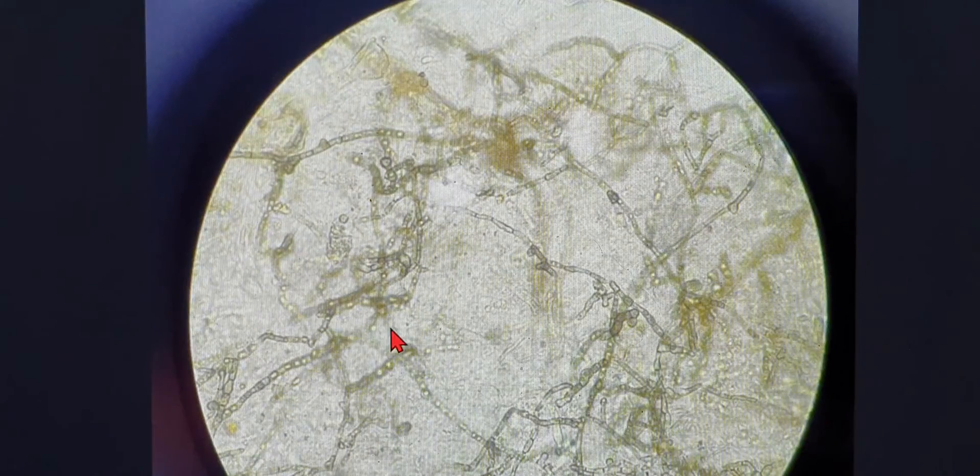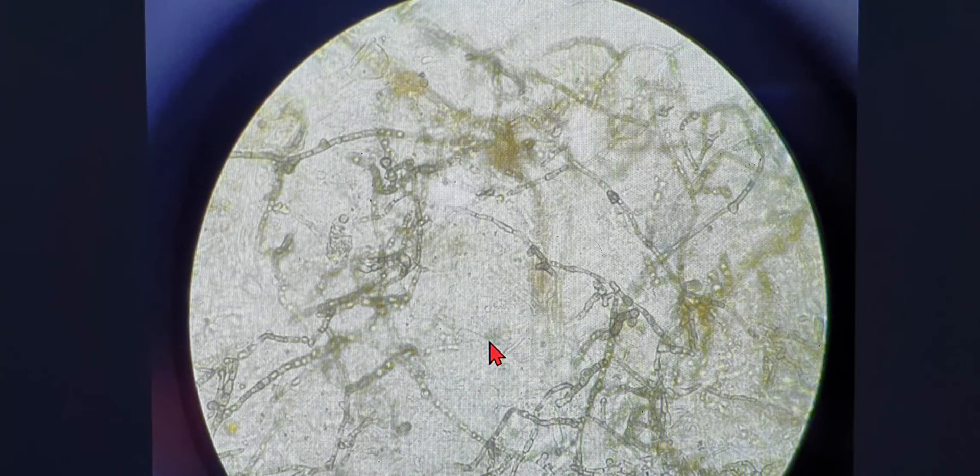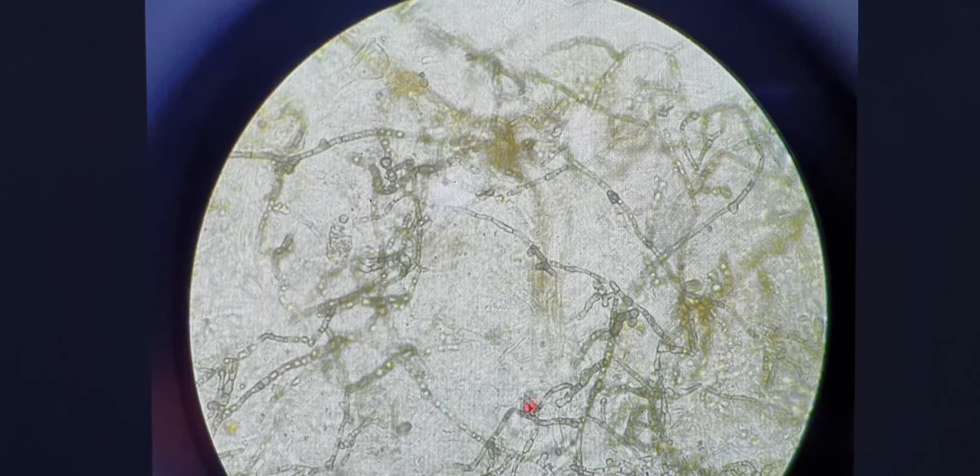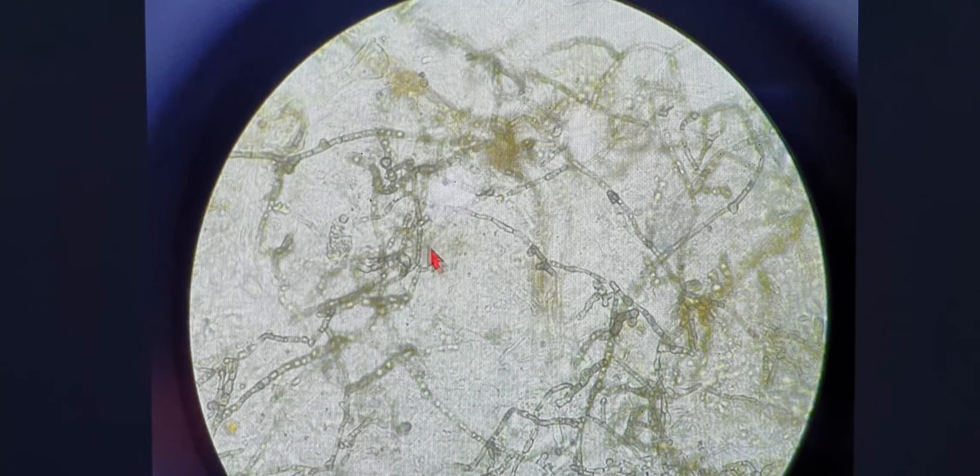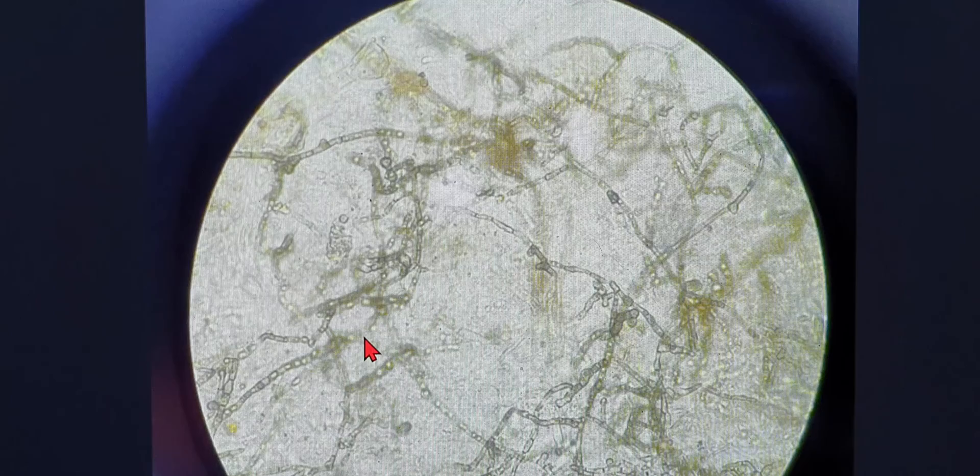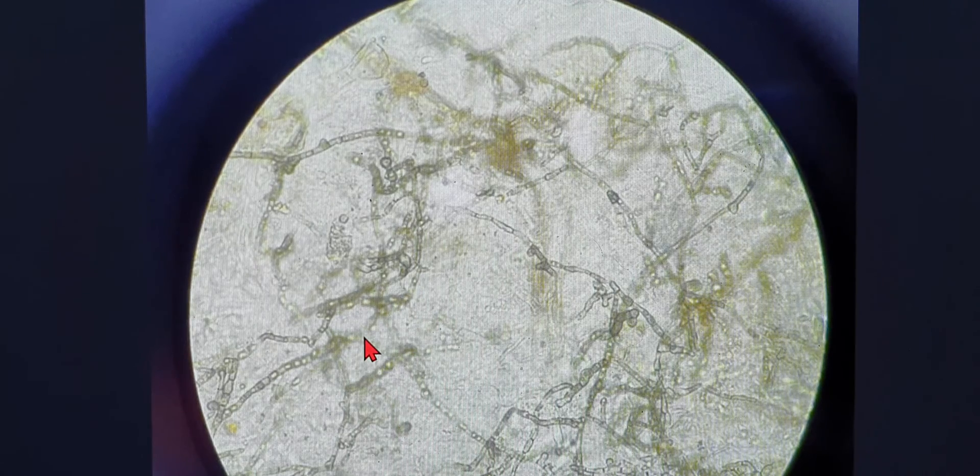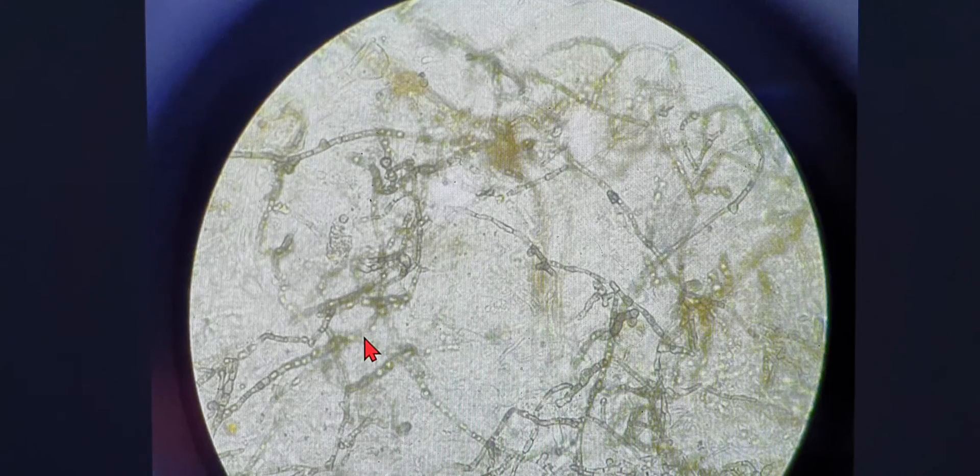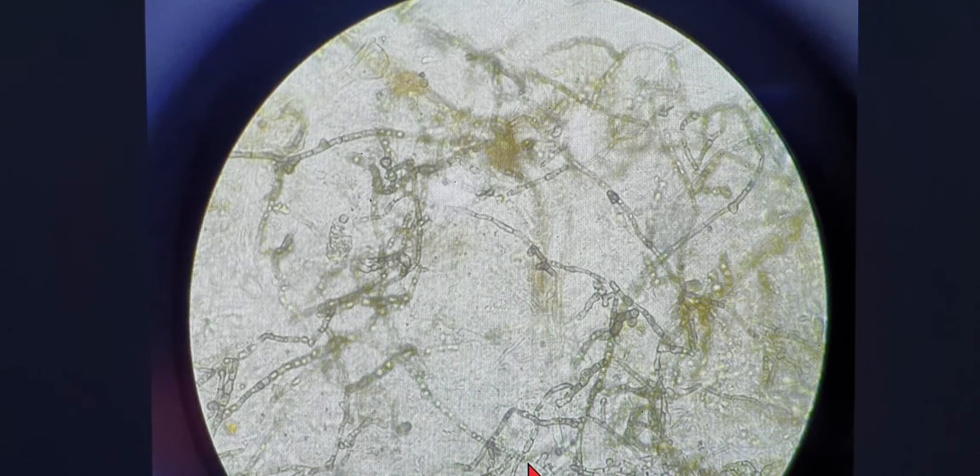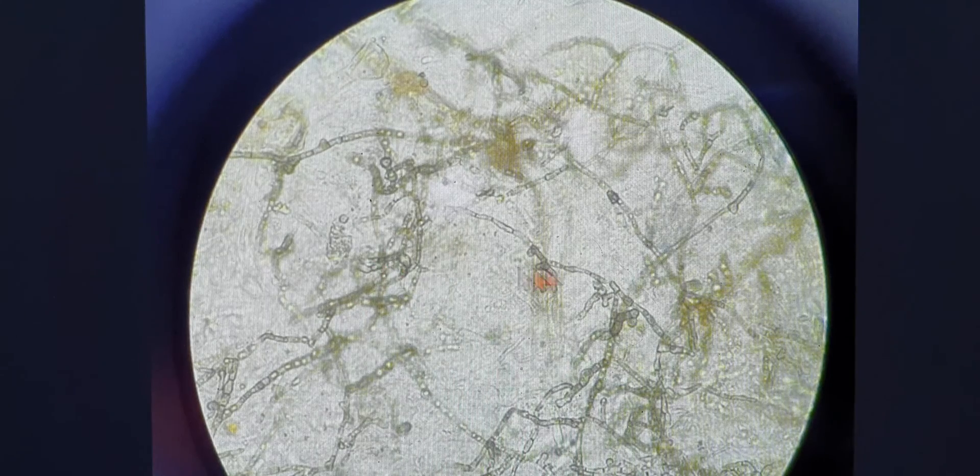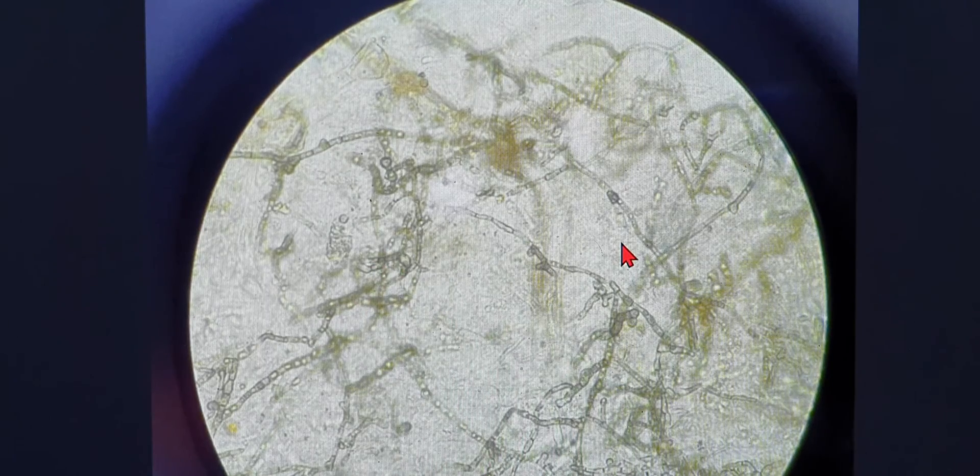This is also a KOH mount where you can see the typical septations. These are the septations of the fungi. This is aspergillus. Aspergillus are basically septate, they are narrow septate and they have an acute angulation which is around 45 degree angulation. So if something looks like this, there has to be aspergillus.